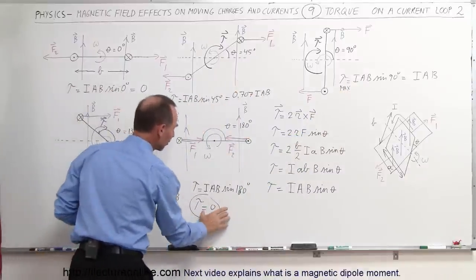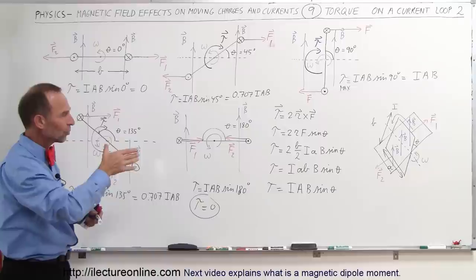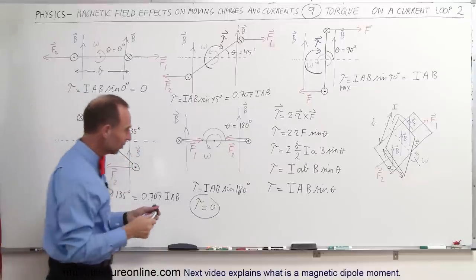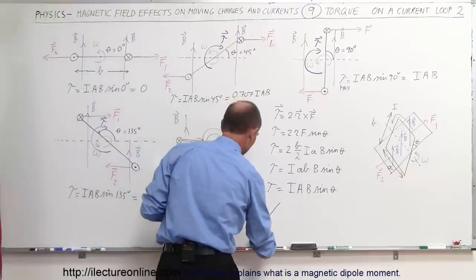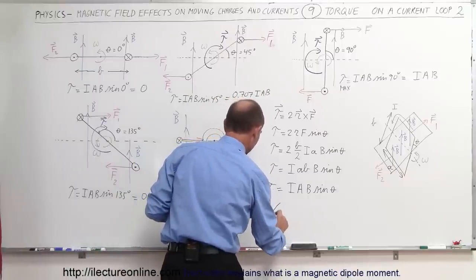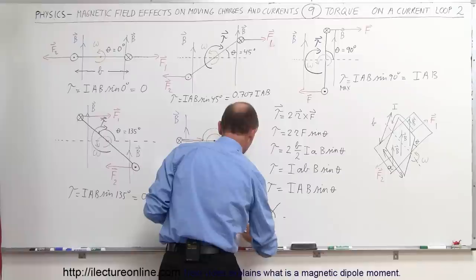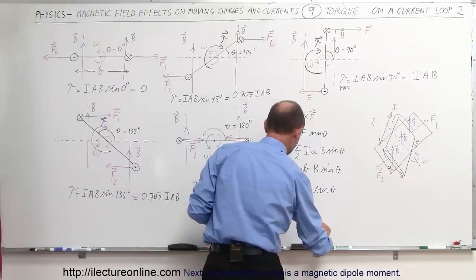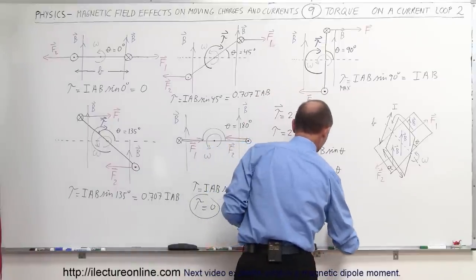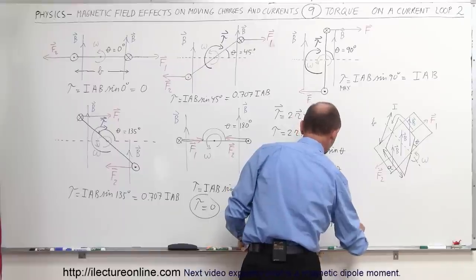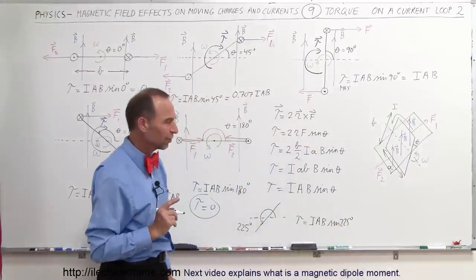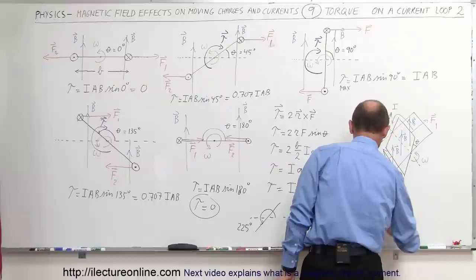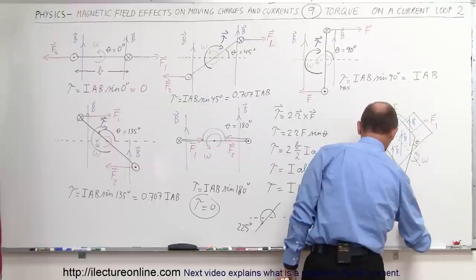So to summarize: zero torque, 0.707·I·A·B, maximum torque I·A·B, 0.707·I·A·B, zero torque. What happens when it turns another 45 degrees? If it turns to 225 degrees, then the torque equals I·A·B times sine of 225 degrees, which is minus 0.707. So now we have a negative torque: minus 0.707·I·A·B.